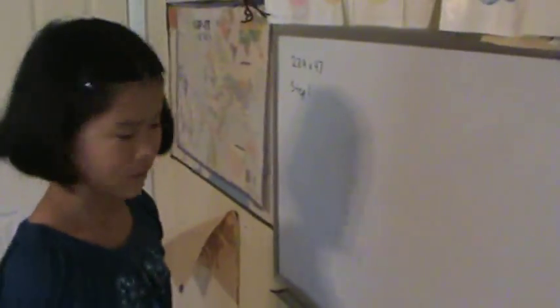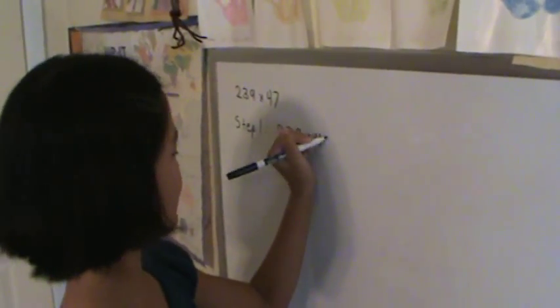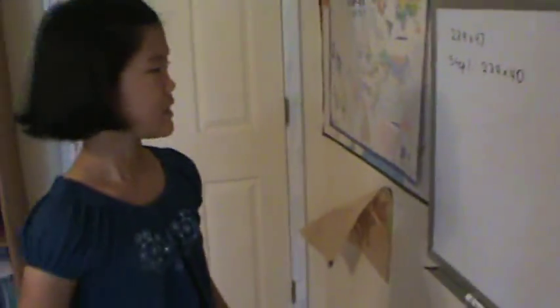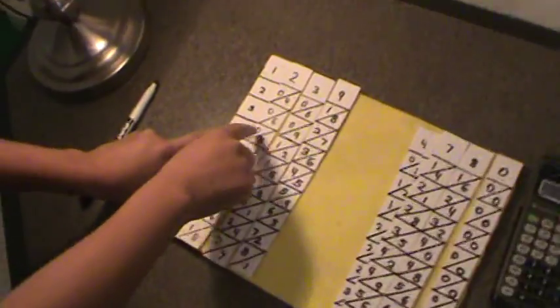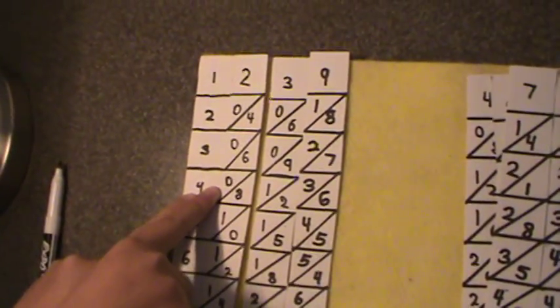So for the first step, you are going to multiply 239 by 40. To do that, you go down to the 4, then you go across. The first number you come to is 0, so that doesn't count.